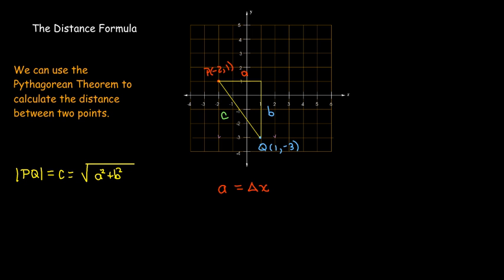The other two distances are the legs. The horizontal leg, which we call a, has a length equal to the change in the x-coordinates — delta x. The x-coordinate of Q is 1 and the x-coordinate of P is -2, so going from -2 to 1 we've gone 3 units.